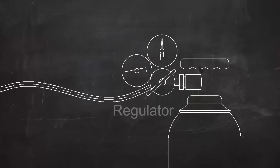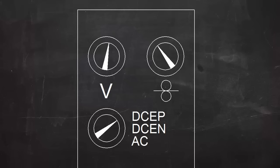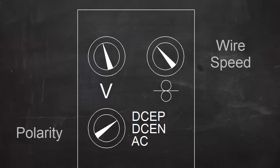In MIG welding, all the machine controls are set on the machine itself. The most important of these are polarity, wire speed, and voltage.